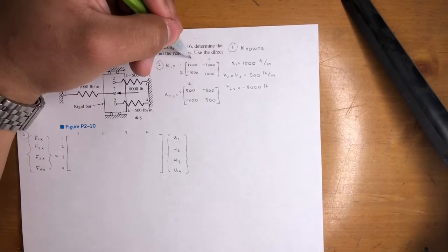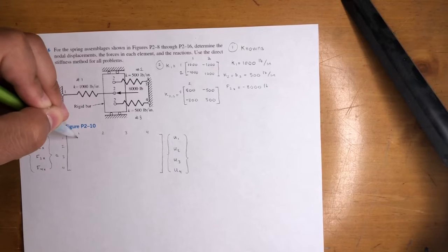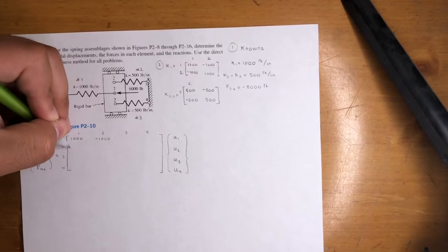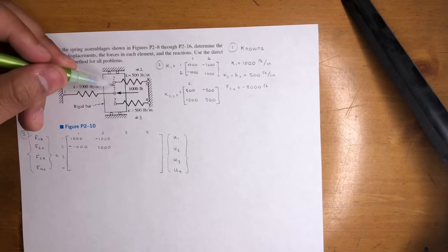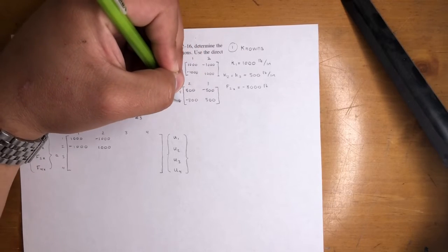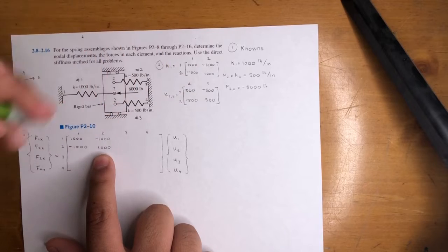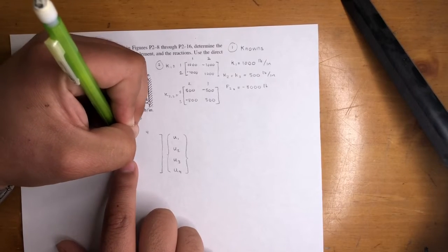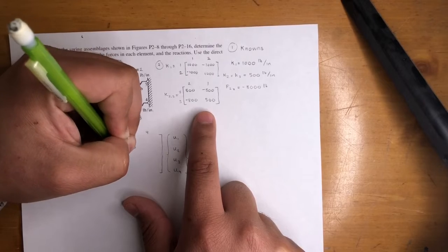The first spring is between nodes one and two. So on the global matrix it's going to be at position one, two, one, two. These first four positions will be 1,000, negative 1,000, negative 1,000, and 1,000. The second spring is between nodes two and three. Position two-two already has 1,000, so we're going to add 500 to that — making it 1,500. Then negative 500 at two-three, negative 500 at three-two, and 500 at three-three.